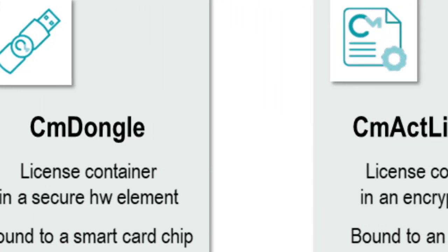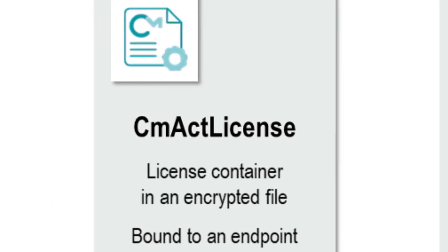Alternatively, you can use a software-based container, which we call CMACT license. This is an encrypted license file, which is bound to the hardware properties of a computer or a target device. The binding is realized with asymmetric encryption, where the computer fingerprint acts as the private key. Therefore, the encrypted license file cannot be decrypted at another computer or device. Thanks to a tolerance mechanism patented under the name of SmartBind, the license stays valid even if some hardware properties have changed over time.